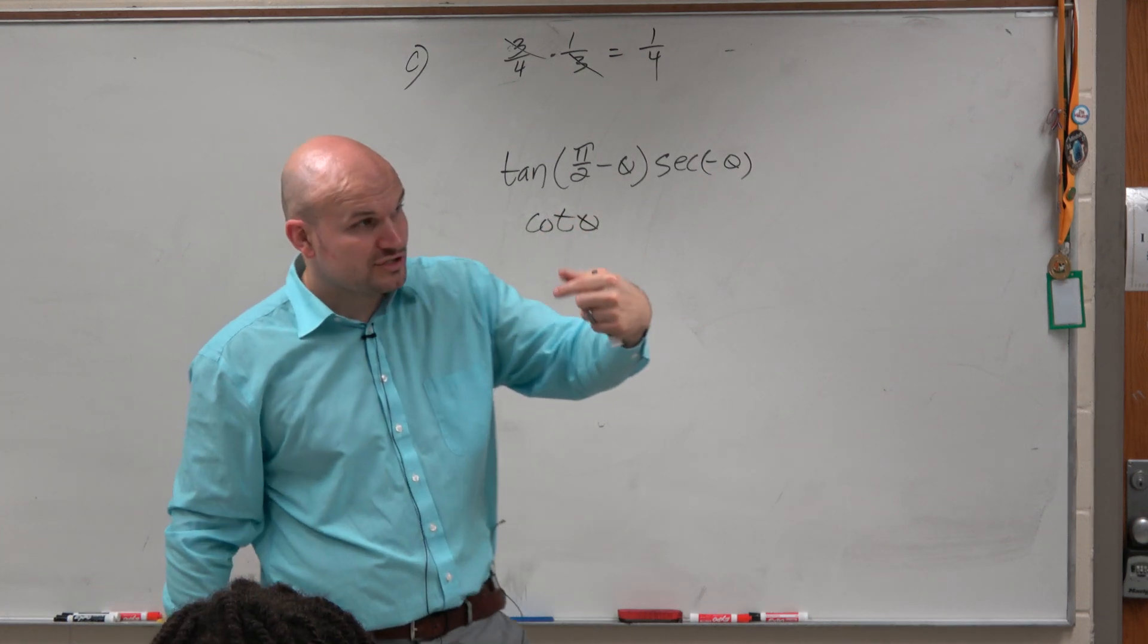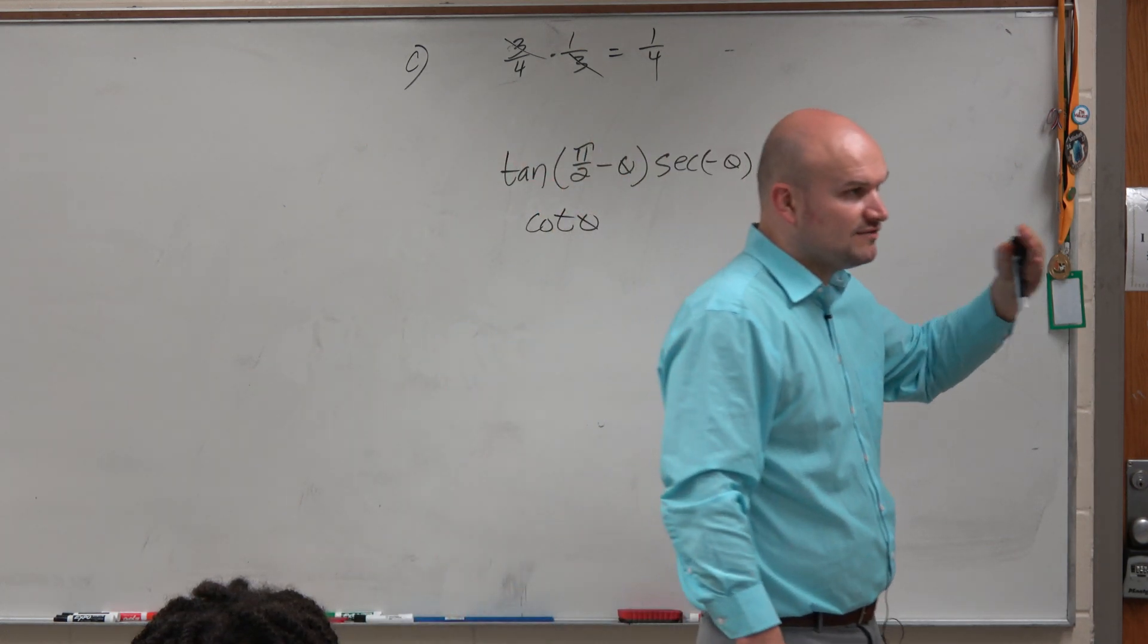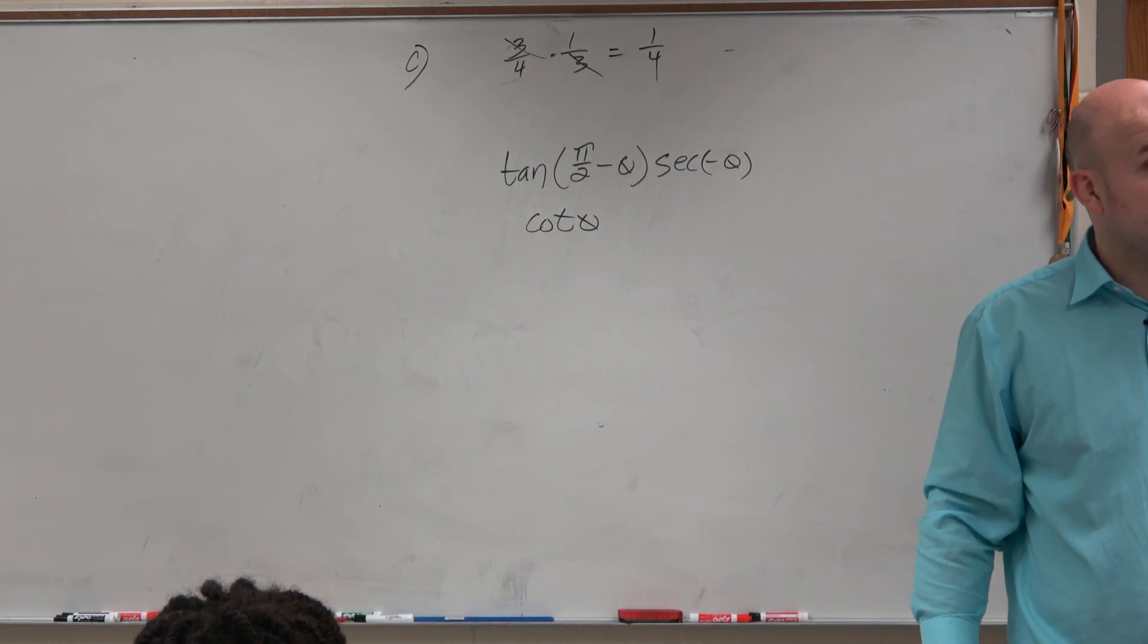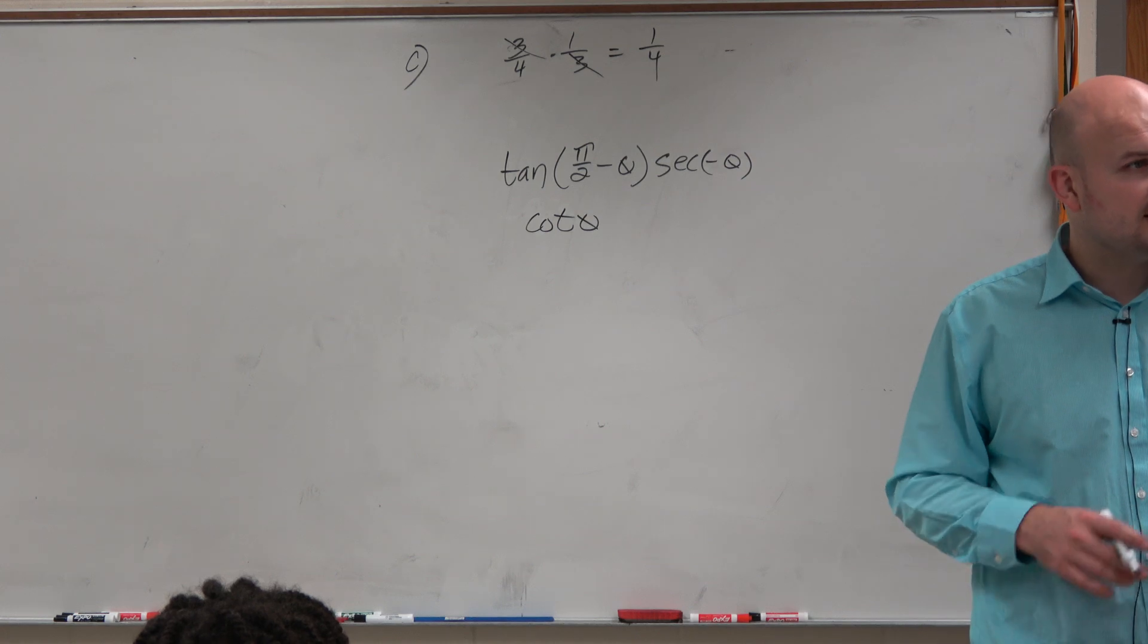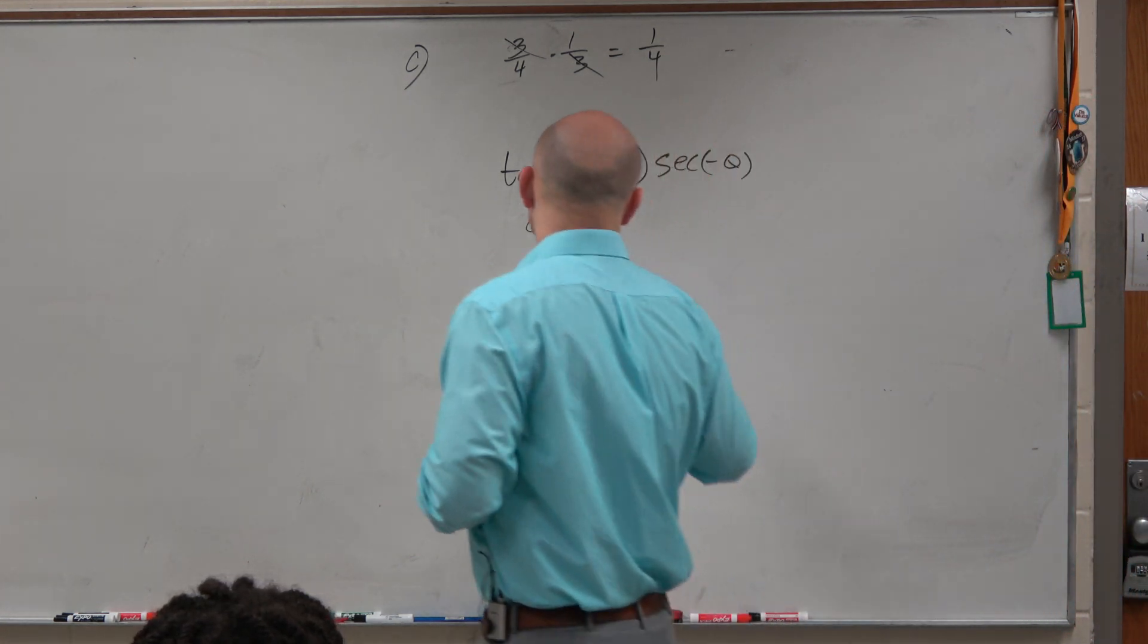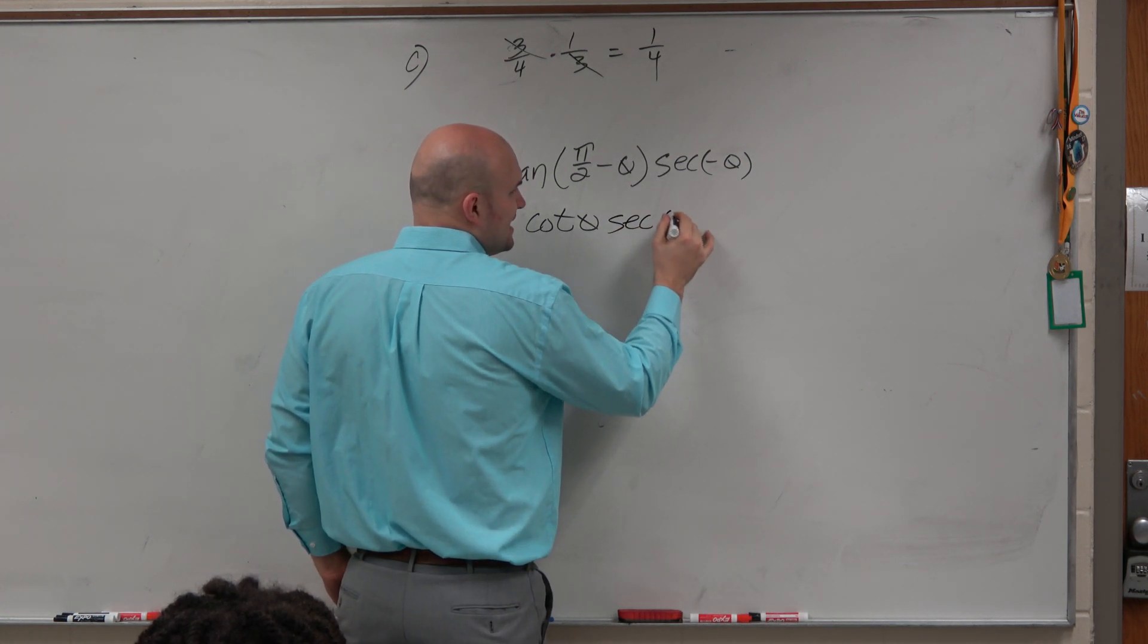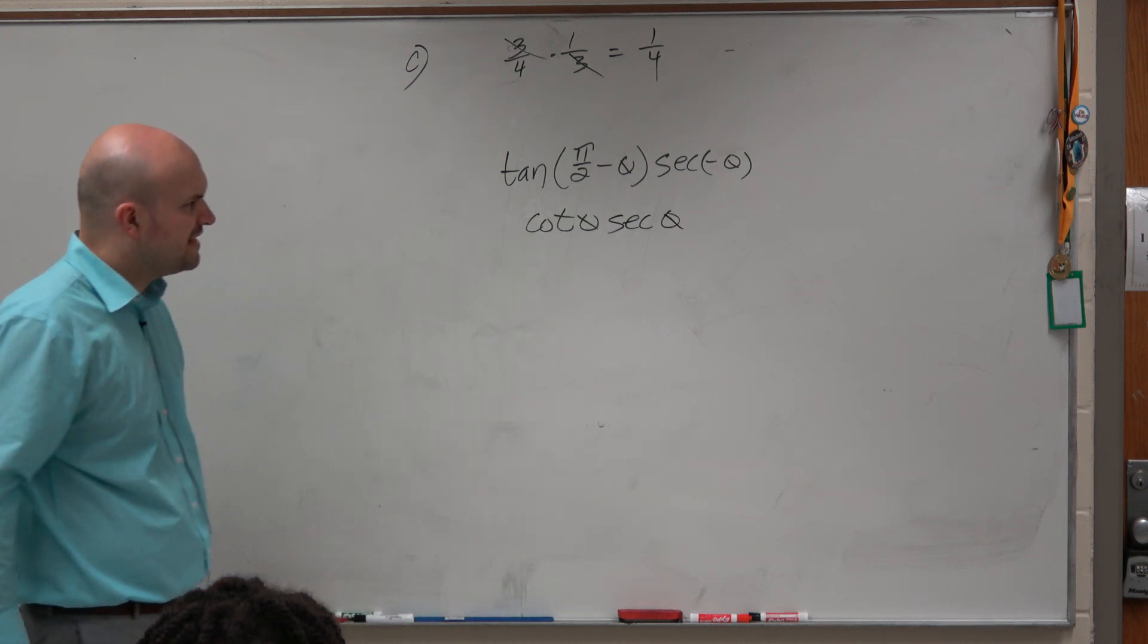And then remember, the even and odd functions is basically, whenever you have the trigonometric function of a negative angle, it's always going to make a negative function, except for cosine and secant, because cosine and secant are even functions. So the secant of a negative angle is the same as the secant of a negative angle, or of just secant of theta.